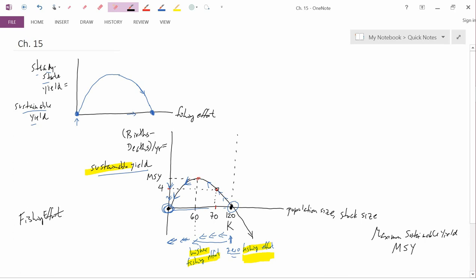We started this chapter talking about biological mechanics, which didn't have anything to do with humans. Then we added the possibility that humans might be killing some of this fish, being the harvest, and we discussed yield. Harvest and yield are the same thing, and we discussed sustainable yield or steady-state yield.